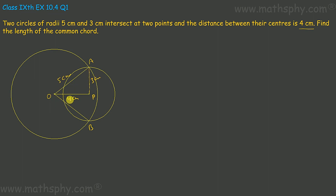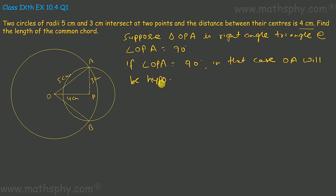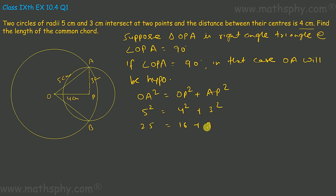If that is established, then triangle OPA would be a right angle triangle, right angle at OPA. Suppose triangle OPA is a right angle triangle at angle OPA, which is 90 degrees — we have supposed this, we haven't proved this yet. If angle OPA is 90 degrees, OA will be the hypotenuse, and OA squared should equal OP squared plus AP squared. OA squared is 5 squared, OP squared is 4 squared, and AP squared is 3 squared. This comes to 25 equals 16 plus 9, meaning 25 equals 25, as per Pythagoras theorem.